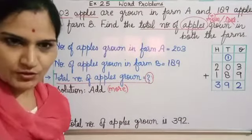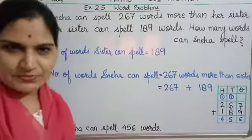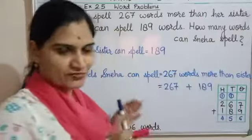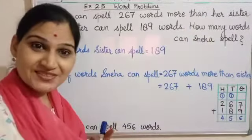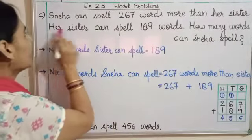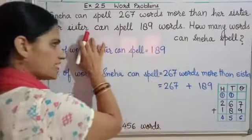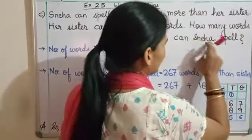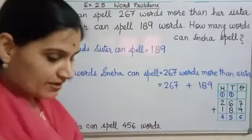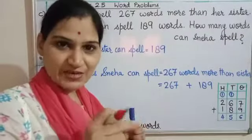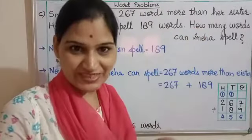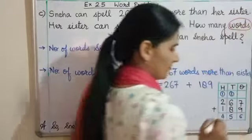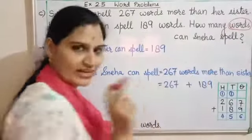Let us see C part — aaj dono parts karenge aapko — A and C parts in your notebook. Next is the C part. Let me read the word problem: Sneha can spell 267 words more than her sister. Yeh ek information hai — Sneha apni sister se kuch zyada words bol sakti hai. Her sister can spell 189 words. Phir se ek information hai. How many words can Sneha spell? Yeh ek question hai. 'How many' ek question phrase hai — what is, how many, find out — these are question phrases. Uske baad dekha hai 'words' — this is our question item name.